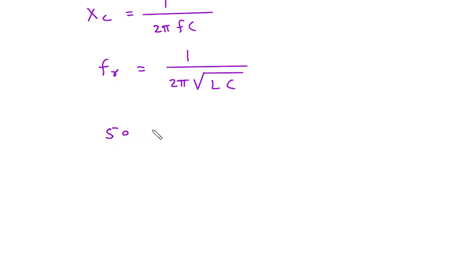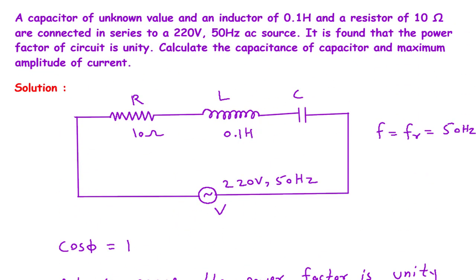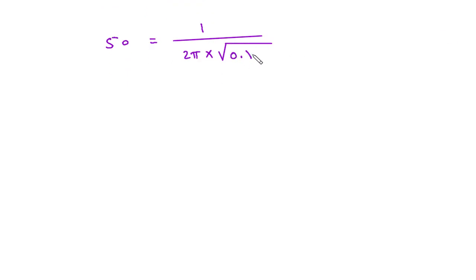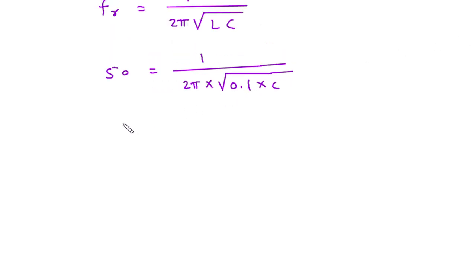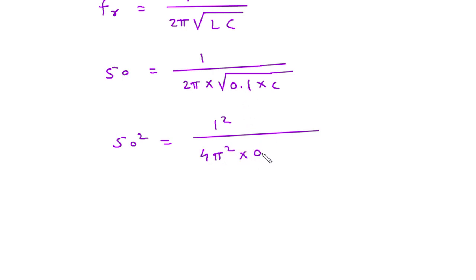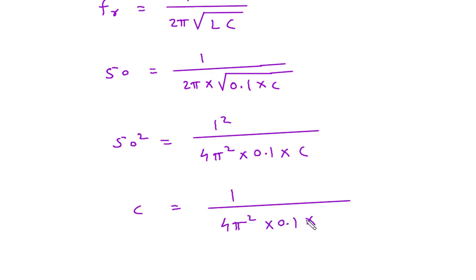So F_R = 50 = 1 / (2π√(0.1 × C)). We take the square on both sides: 50² = 1 / (4π² × 0.1 × C), since the square and square root cancel. From this we get C = 1 / (4π² × 0.1 × 50²).